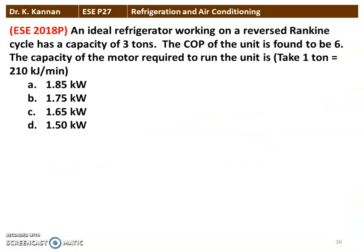The first question from the 2018 question paper: An ideal refrigerator working on a reversed Carnot cycle has a capacity of 3/10 tons. The COP of the unit is found to be 6. The capacity of the motor required to run the unit is — we have 4 options: 1.85 kilowatts, 1.75 kilowatts, 1.65 kilowatts, 1.5 kilowatts. We take 1 ton equal to 210 kilojoules per minute. The correct answer is 1.75 kilowatt. We will see how in the next slide.